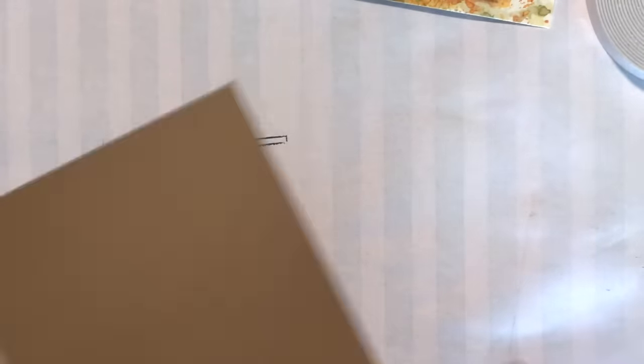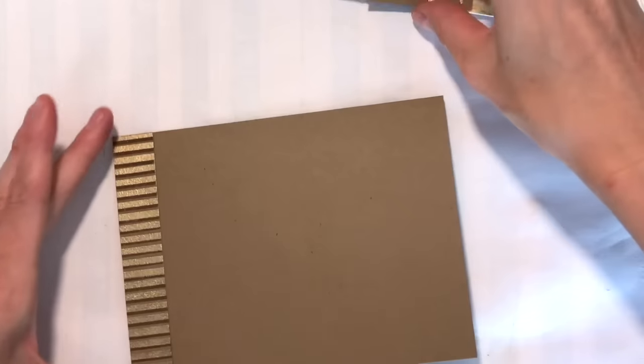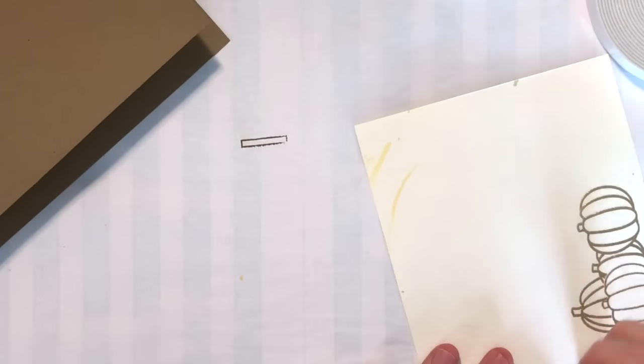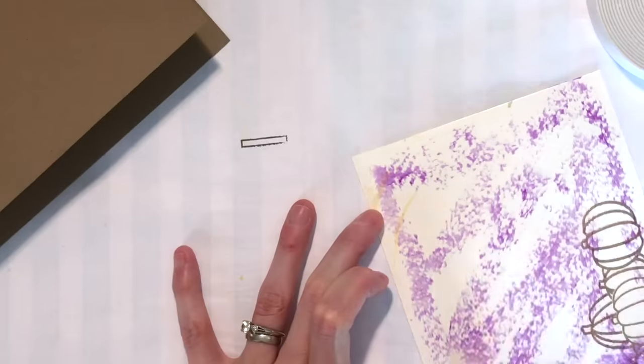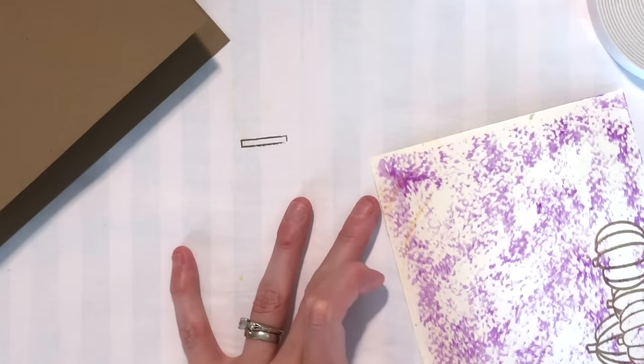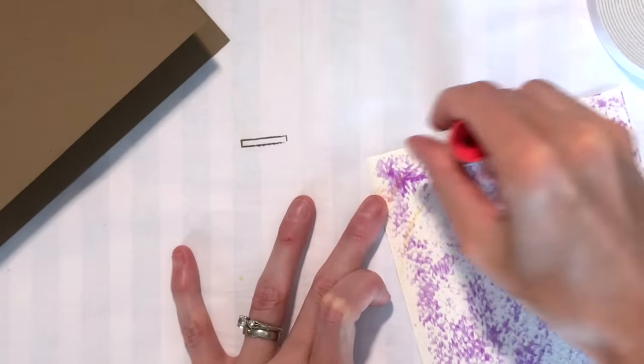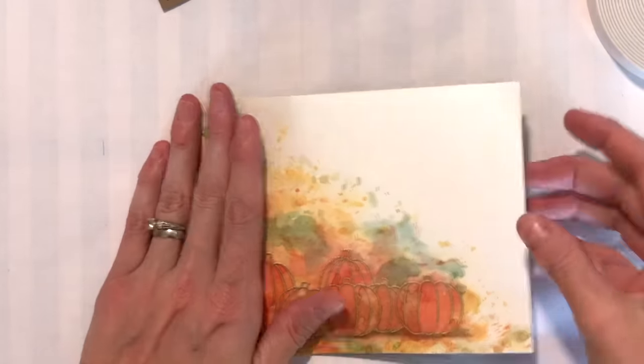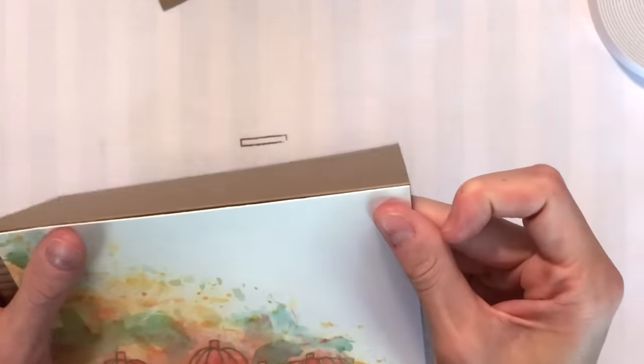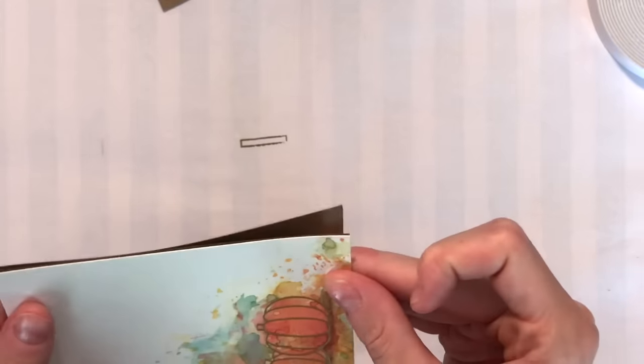And then I will adhere my watercolor panel. Now my watercolor panel was cut a little shorter than my card and that's so that you can see that accent strip on the side. You do see pumpkins on the back of this watercolor panel because I stamped them and embossed them and I didn't like the way they looked, so I just flipped the panel over and used the other side. Can't waste that watercolor paper. It is expensive.